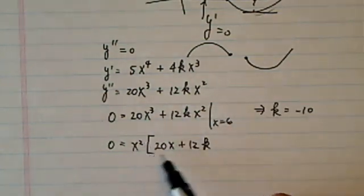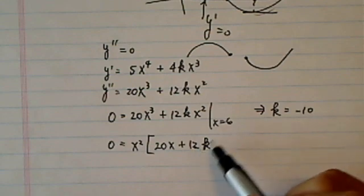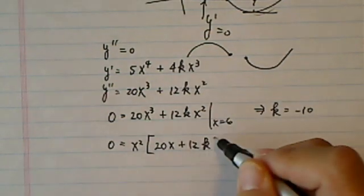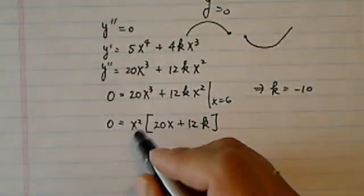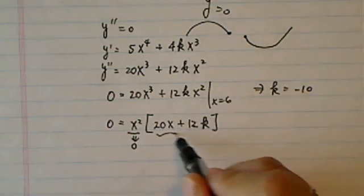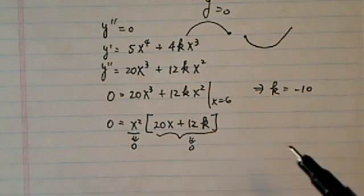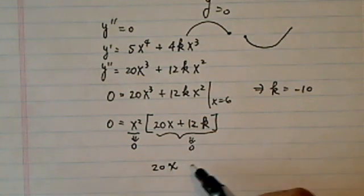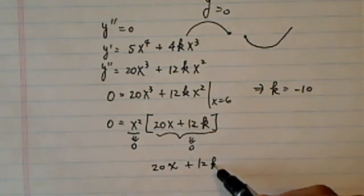All right, so pulling out x squared over here, I have 20x plus 12k. Setting this equal to zero, so then I have either this part equal to zero, or this part equal to zero. So if 20x plus 12k equal to zero,